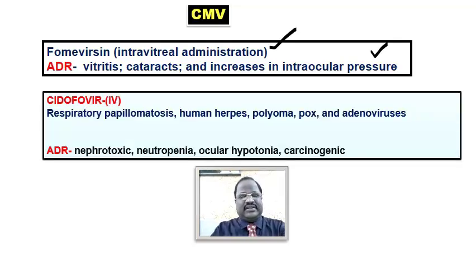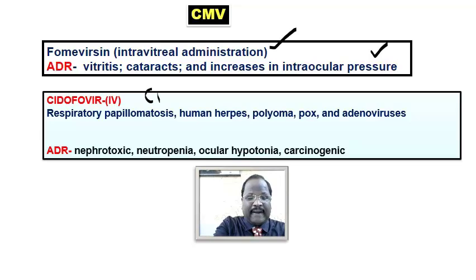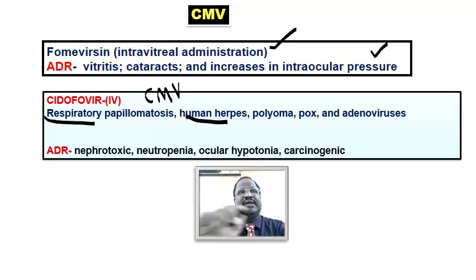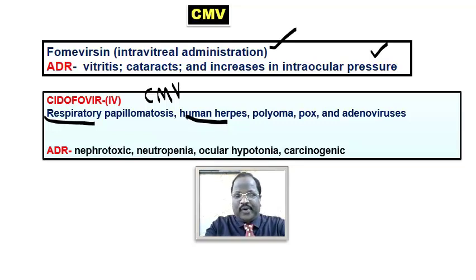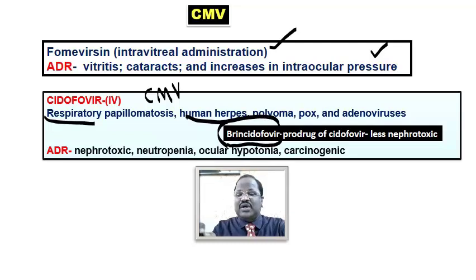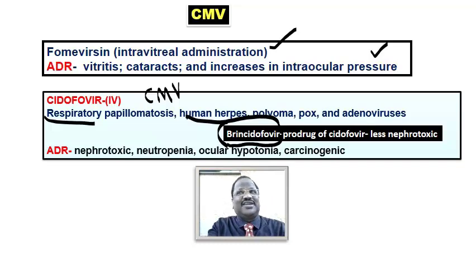Cidofovir is mainly useful for cytomegalovirus infection but also useful for respiratory papillomatosis and herpes simplex. Its side effects include nephrotoxicity, neutropenia, ocular hypotonia, and carcinogenicity. An extra point: we have brincidovir, which is a prodrug of cidofovir having less nephrotoxicity compared to cidofovir — that is the advantage of brincidovir.